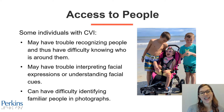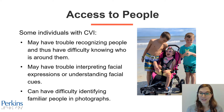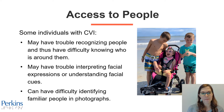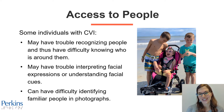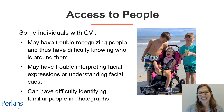Some individuals with CVI can have trouble recognizing people and, of course, it's hard for them to know who's around them at any time. They can have trouble interpreting facial expressions or understanding facial cues, which can have social implications. They can have difficulty identifying familiar people in photographs. In this picture, there's a girl with CVI in a pink stroller on the beach and her two cousins are standing next to her, one on each side. One of her cousins is looking right at her face. The individual with CVI doesn't appear to be making eye contact with her cousin, but she certainly looks very happy.